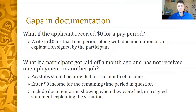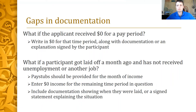There should be documentation for a full two months. If the applicant receives zero dollars for a pay period, it should be written in as zero dollars, with a pay stub or documentation signed by the participant explaining the gap. If a participant with consistent income got laid off a month ago and has not received unemployment or another source of regular income, pay stubs should be provided for the month of income plus a signed statement showing zero income for the other time period.